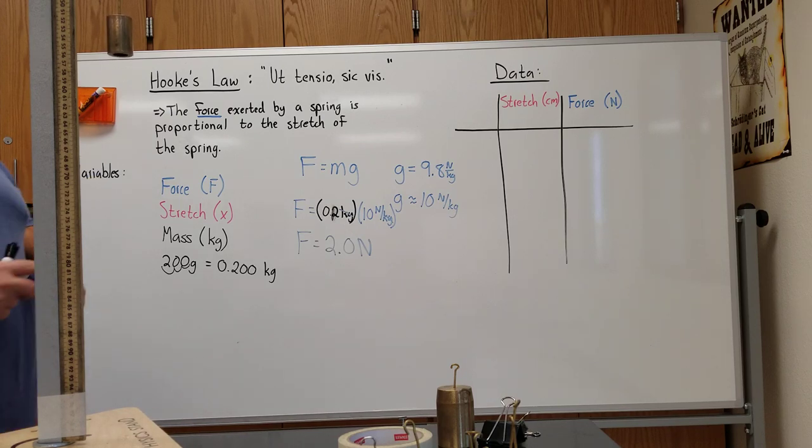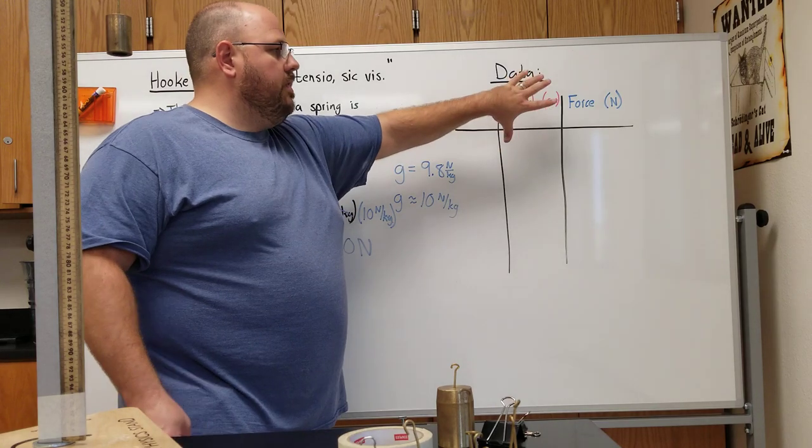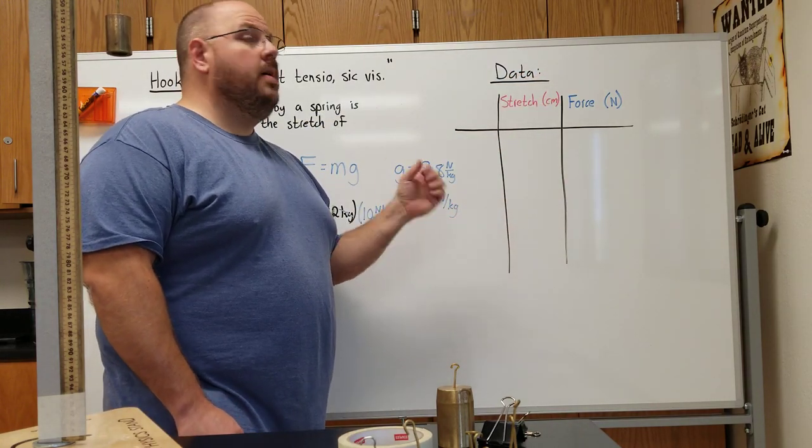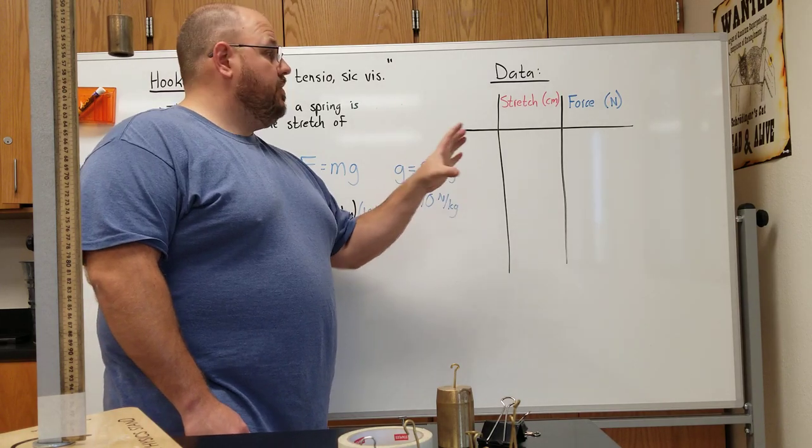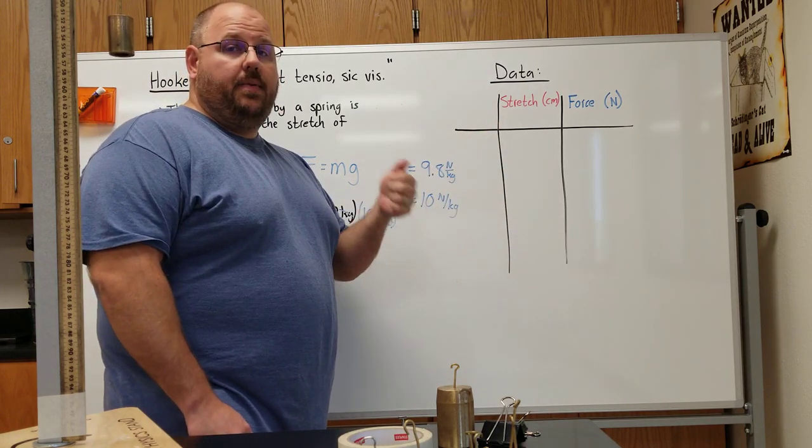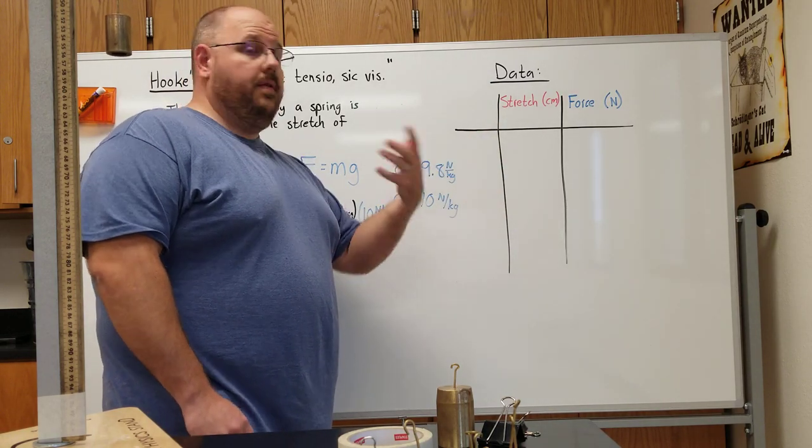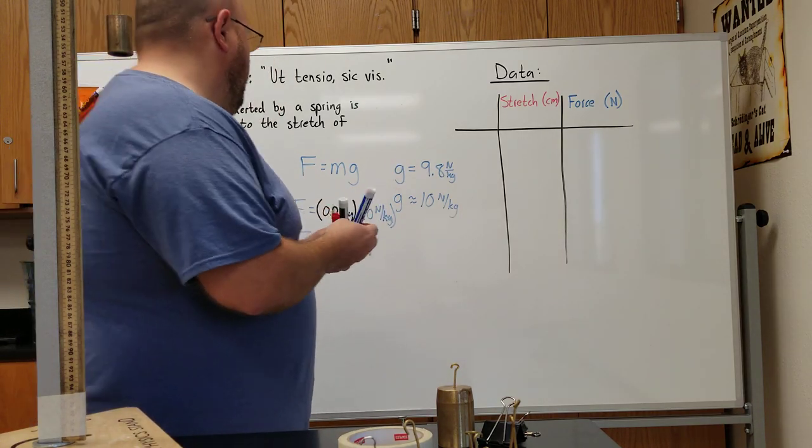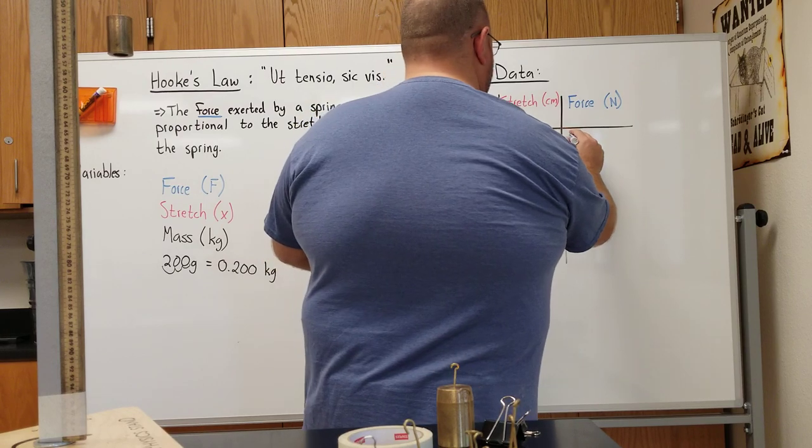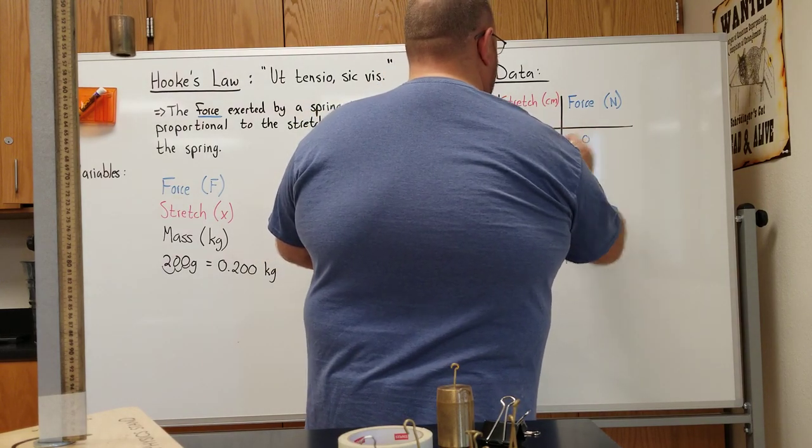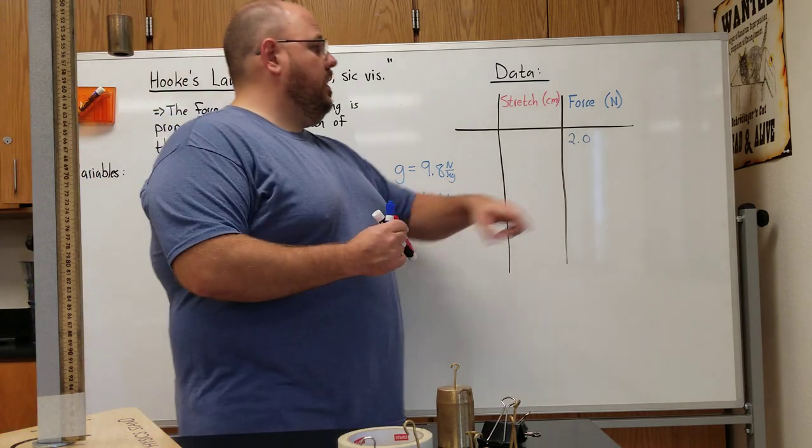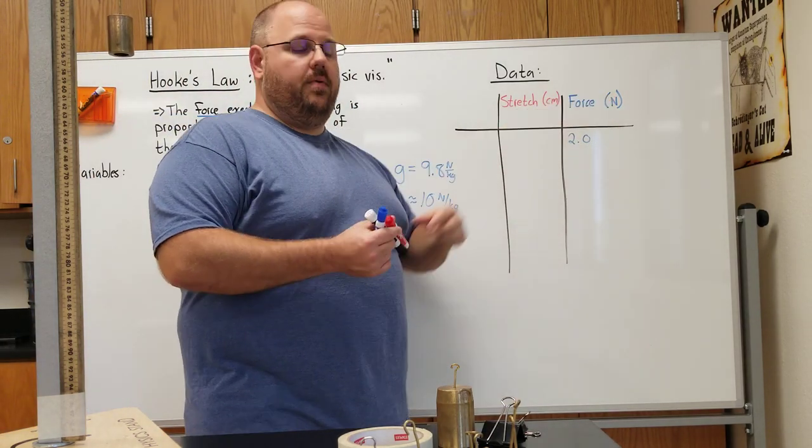So we're going to create a data table. And you definitely want to create your own data table. This can be on the back of the piece of graph paper that you use to graph it. So you can write your data down now, take a picture with your phone, and then flip it over to graph it when we get to that point. So for a force of 2.0 newtons, I can record my units up in the header of my table. That's perfectly fine.